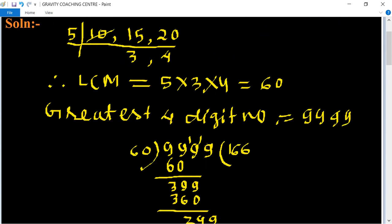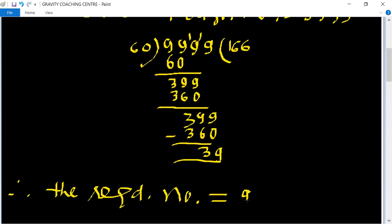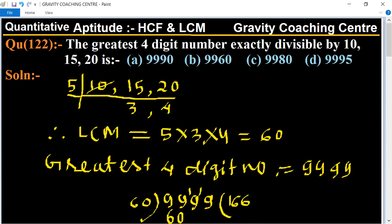Therefore the required number equal to 9999 minus 39 equal to 9960. So 9960 is the required number. Option B is the correct answer which is exactly divisible by 10, 15, and 20.